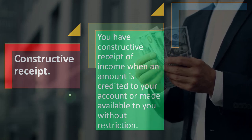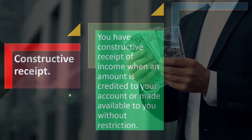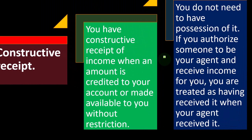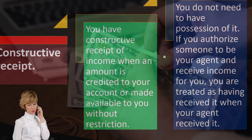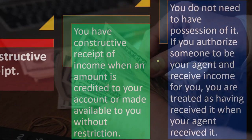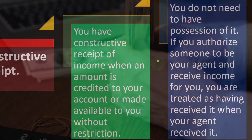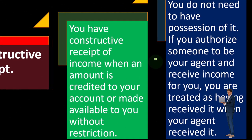Constructive receipt: you have constructive receipt of income when an amount is credited to your account or made available to you without restriction. You do not need to have physical possession of it. If you authorize someone to be your agent and receive income for you, you are treated as having received it when your agent received it. With a cash-based method, you can try to manipulate cutoff dates, but the IRS will try to restrict you from doing that.